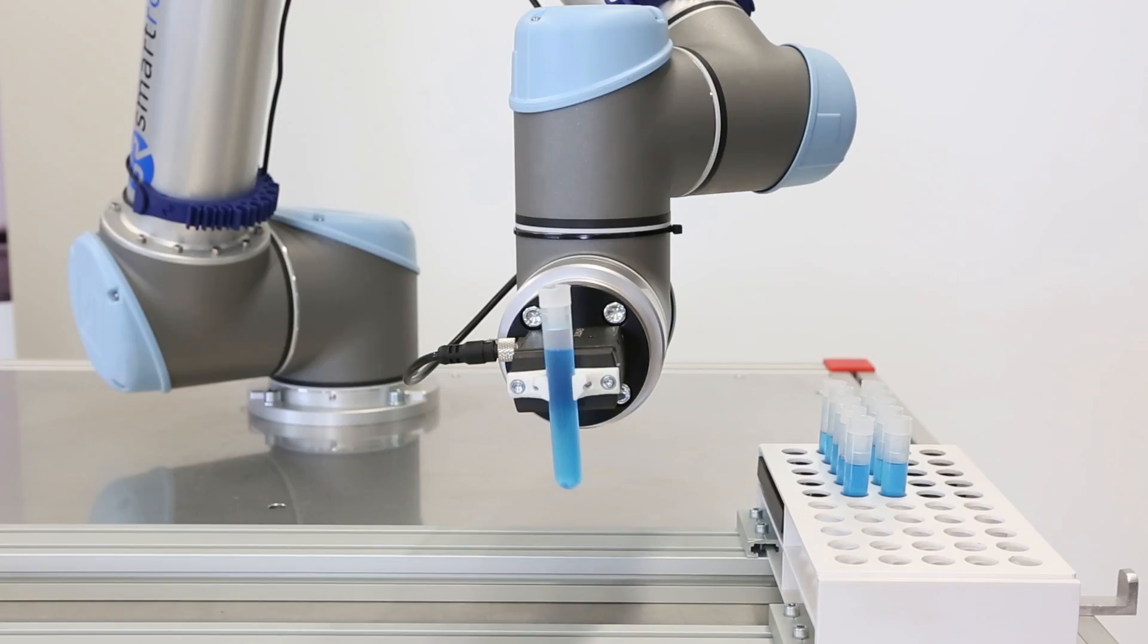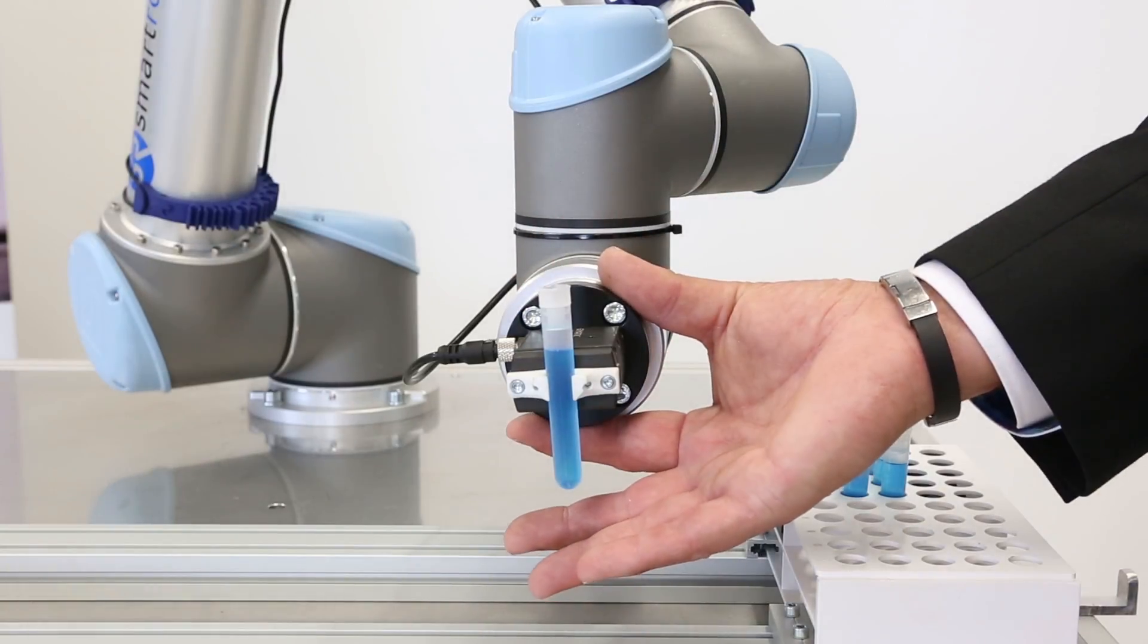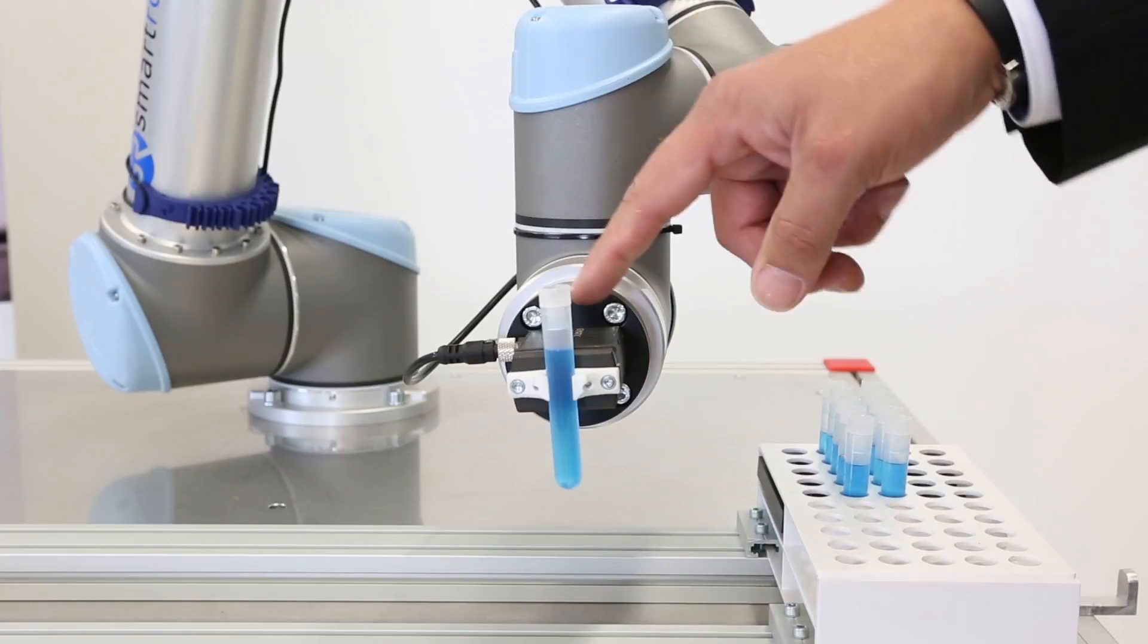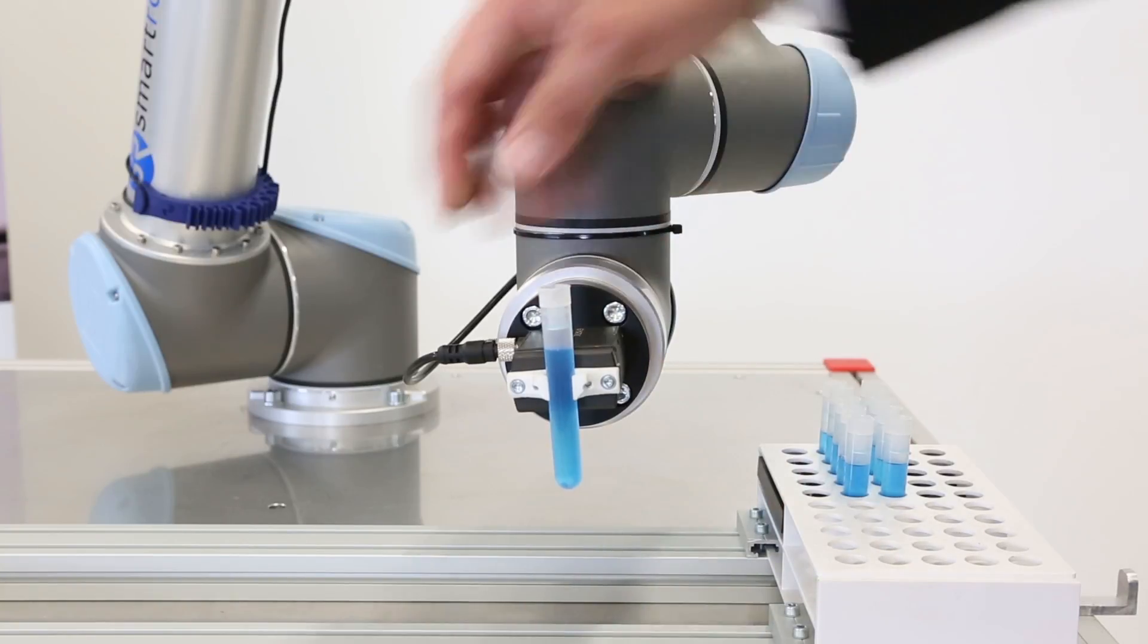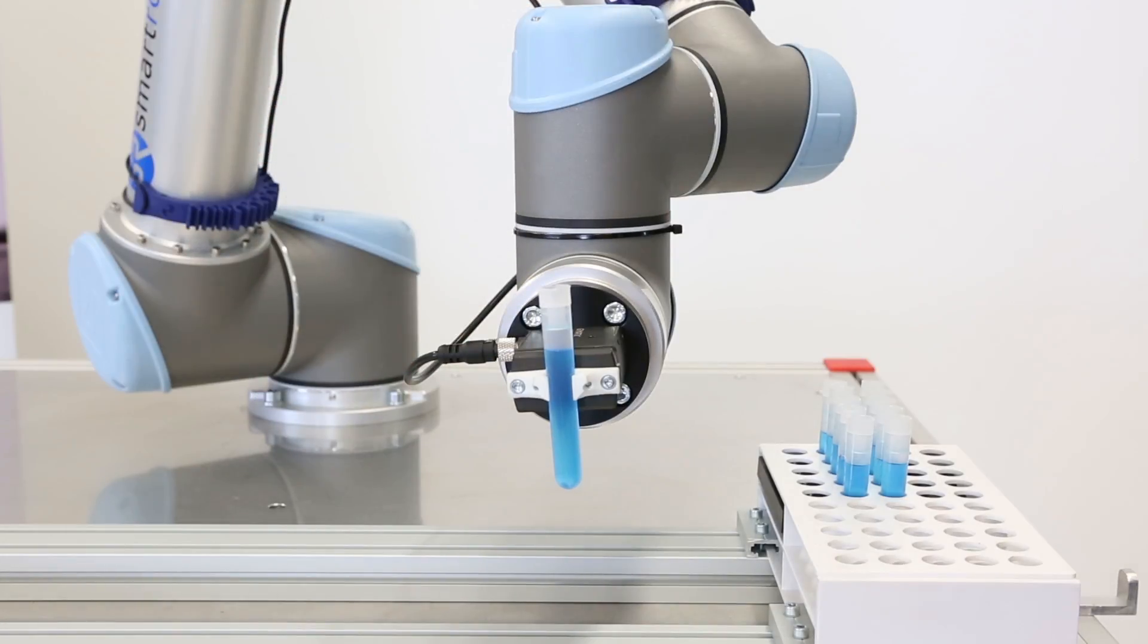Mounting the gripper of gematic is very easy because gematic delivers already the mounting plate. So you don't have to care about any adapters or whatever. Then you can install it with only four screws to the universal robots, mount the cable and bring the cable to the control box.